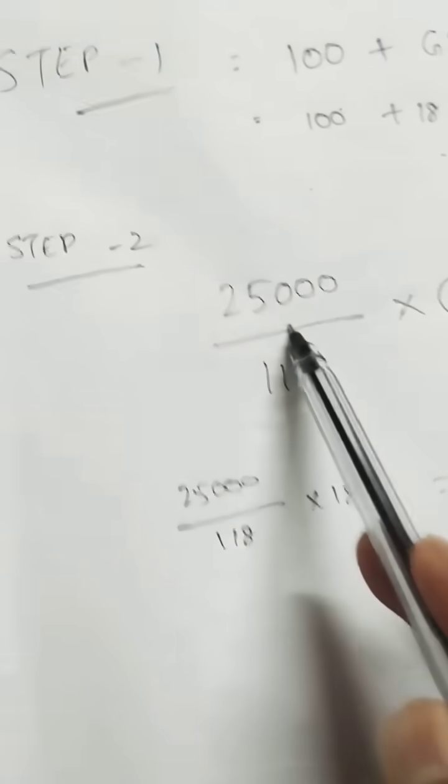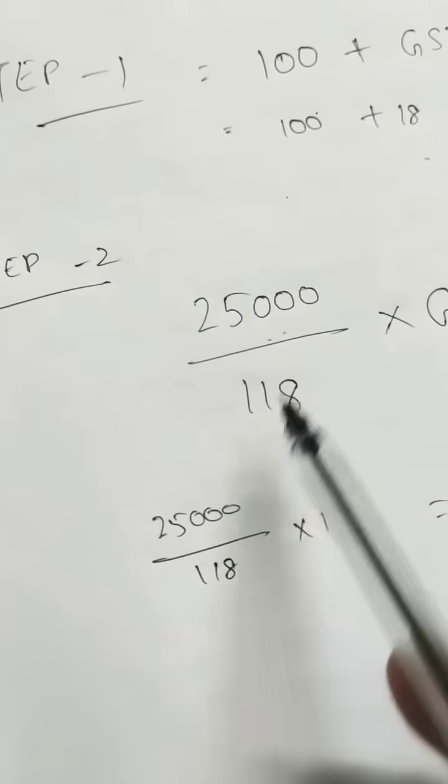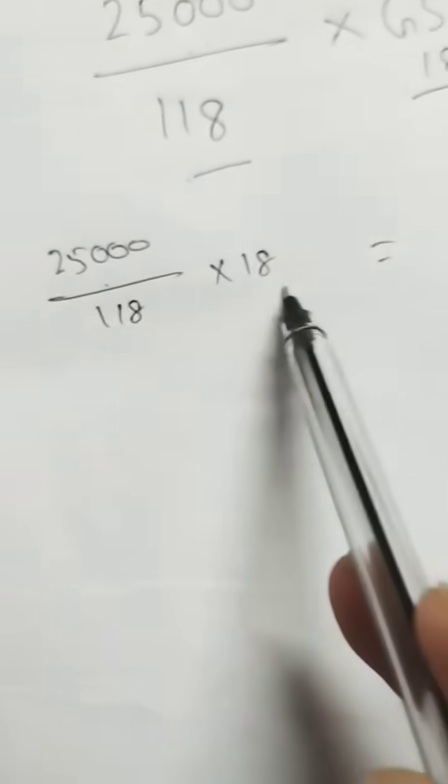Take the price of the product, that is ₹25,000 divided by 118, multiplied by the GST rate. What is our GST rate? It is 18%. So ₹25,000 divided by 118, multiplied by 18.